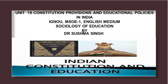Entry 65 covers Union agencies and institutions for professional, vocational and technical training, including the training of police officers, or the promotion of special studies or research, or scientific or technical assistance in the investigation or detection of crime.